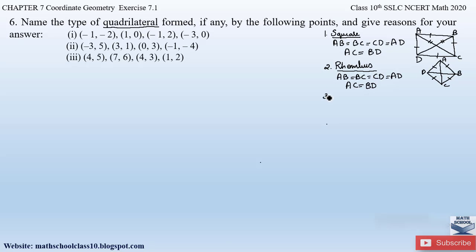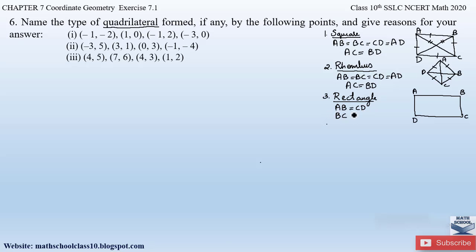The third type of quadrilateral is a rectangle. A rectangle has opposite sides equal. Naming this rectangle A, B, C, D: the opposite sides AB = CD and BC = AD, and also the diagonals are equal in a rectangle — diagonal AC = BD.